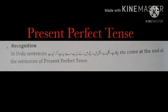Present Perfect Tense Recognition: In Urdu sentences, چکا ہے، چکی ہے، چکی ہیں، چکے ہیں، لے لیا ہے، دے دیا ہے، کر لیا ہے etc. come at the end of the sentences of Present Perfect Tense.